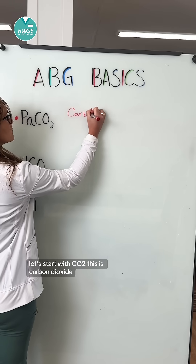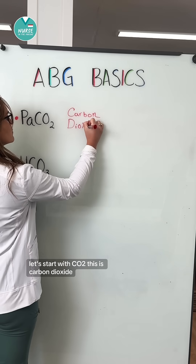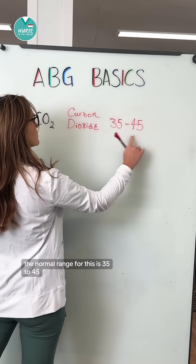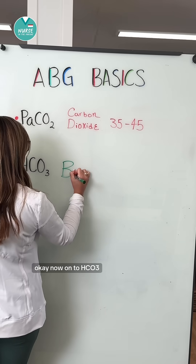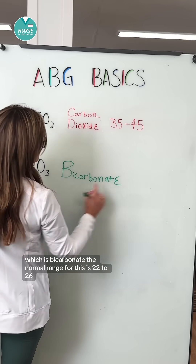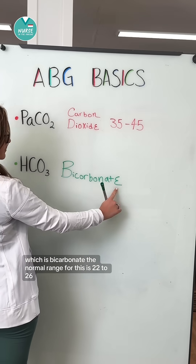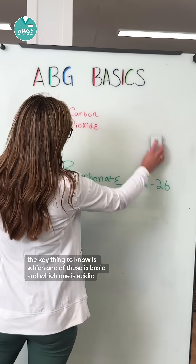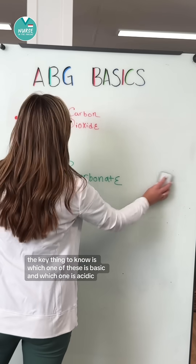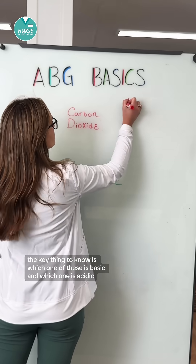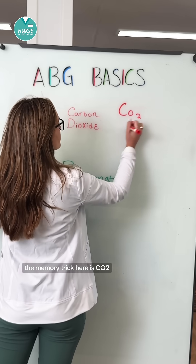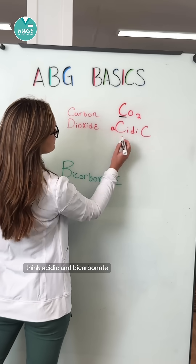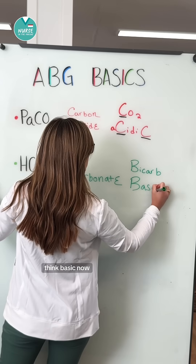Let's start with CO2, which is carbon dioxide. The normal range for this is 35 to 45. Now onto HCO3, which is bicarbonate. The normal range for this is 22 to 26. The key thing to know is which one is basic and which one is acidic. The memory trick here is: CO2, think acidic, and bicarbonate, think basic.